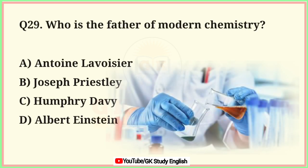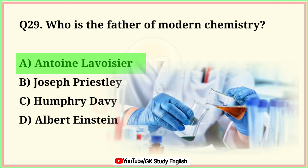Question number 29. Who is the father of modern chemistry? A. Antoine Lavoisier. B. Joseph Priestley. C. Humphrey Davy. D. Albert Einstein. Correct answer is option A. Antoine Lavoisier.